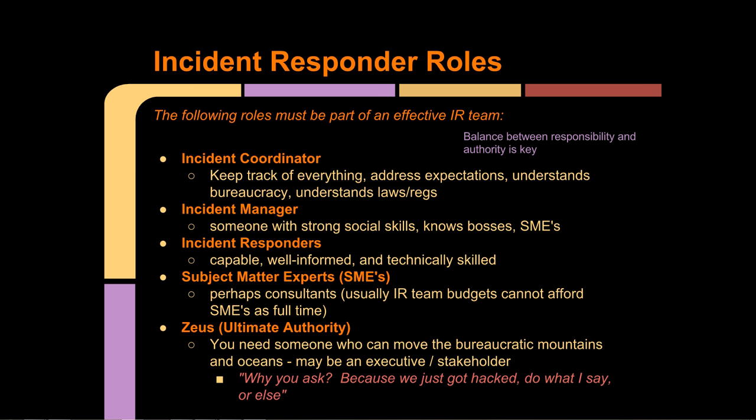You should have a list of consultants you can rely on and call upon. You should also have someone on the incident response team — referred to as Zeus or Thor — someone who can get anything done, who has ultimate authority and can threaten to fire people if they do not comply during an incident. They can move bureaucratic mountains, and may be some form of executive or stakeholder, such as the CISO or CTO, who has the right to fire people.